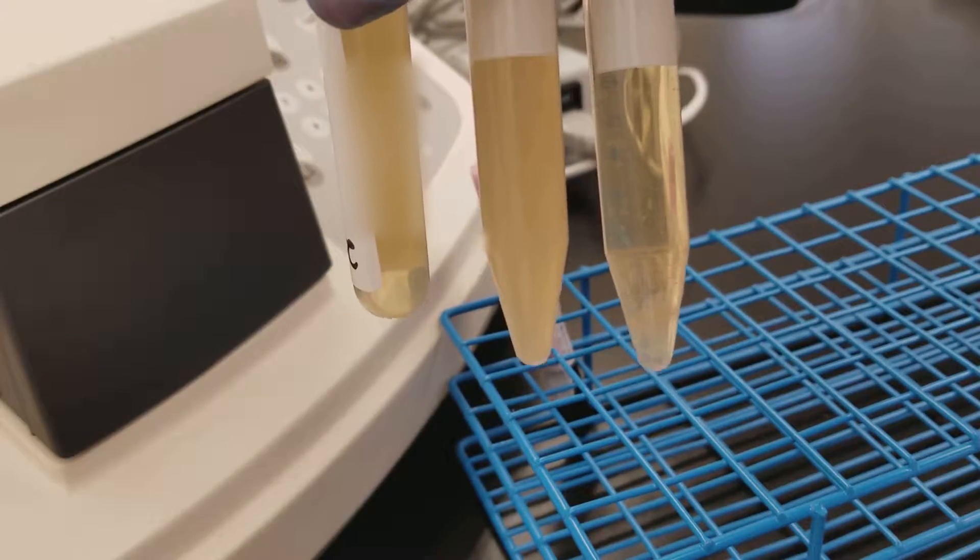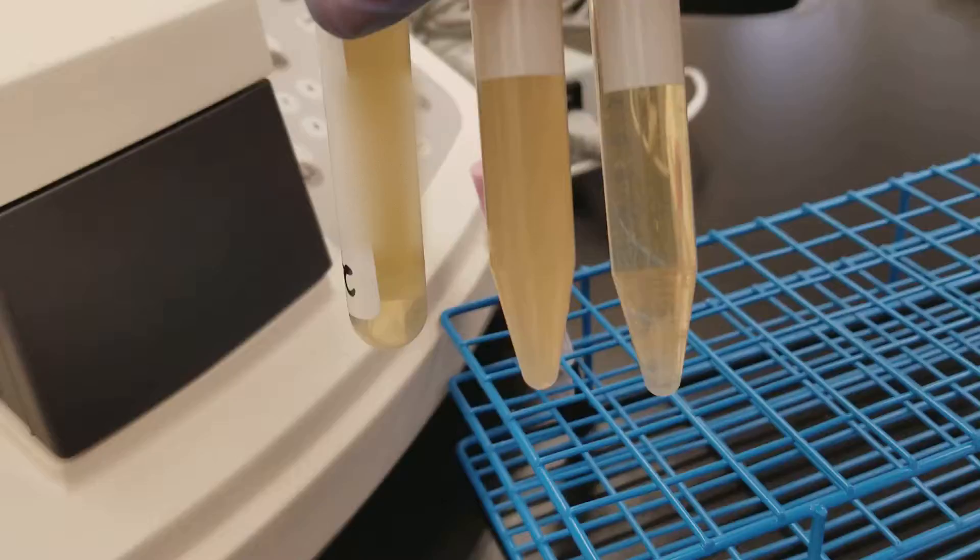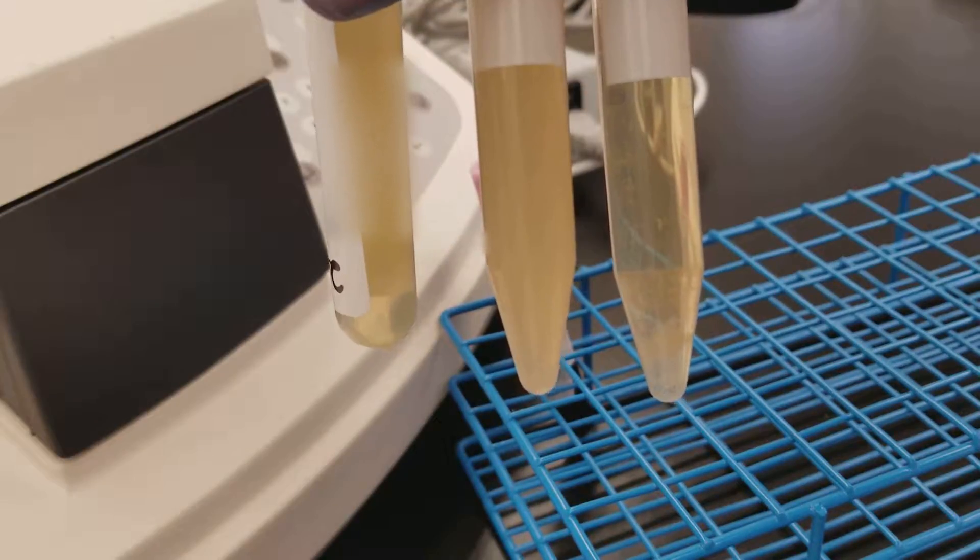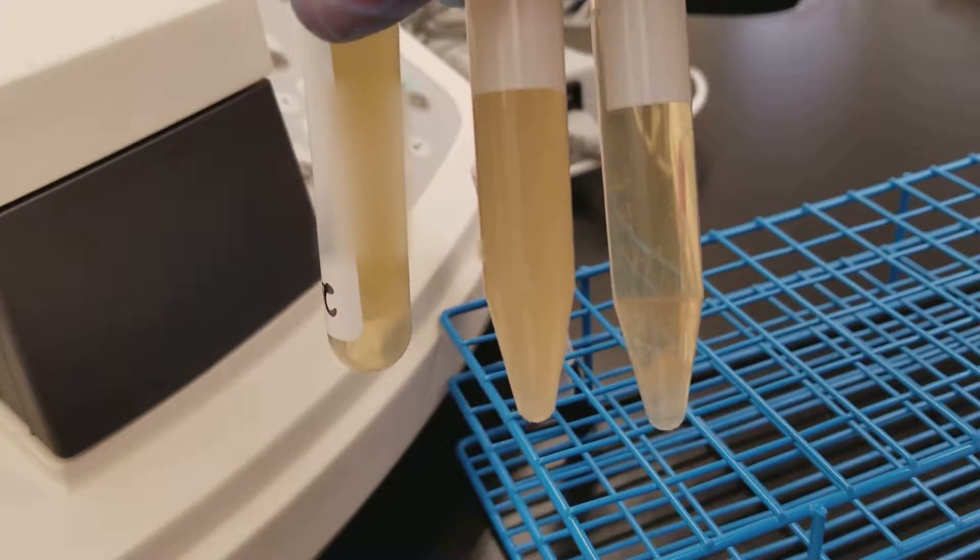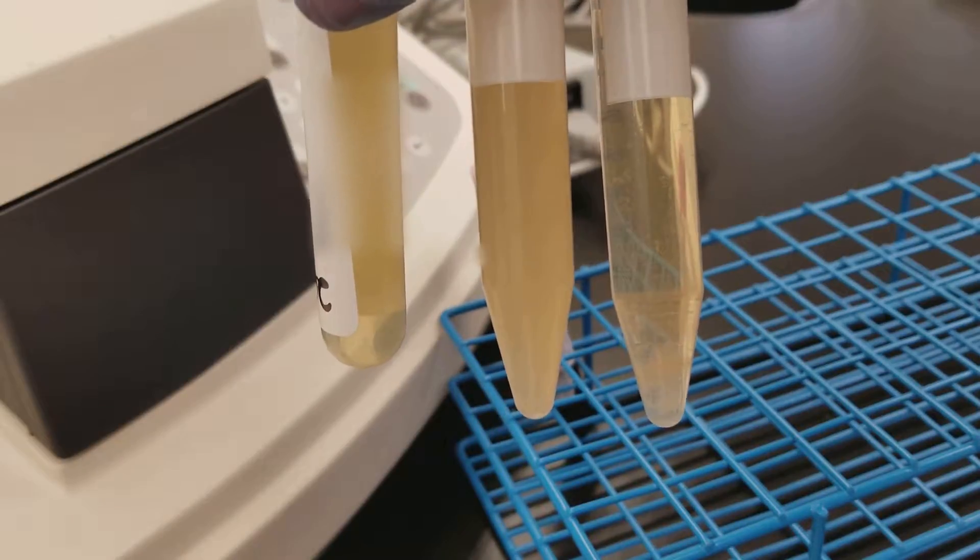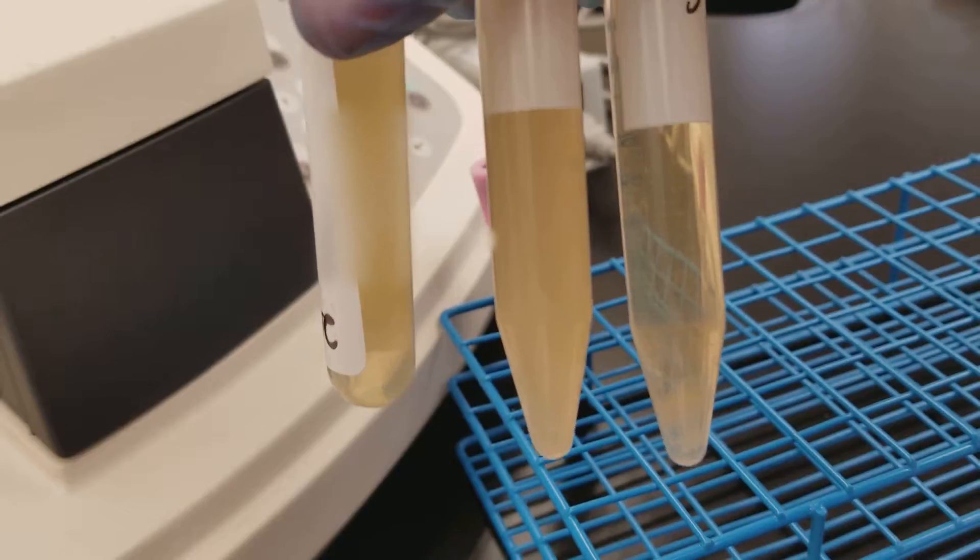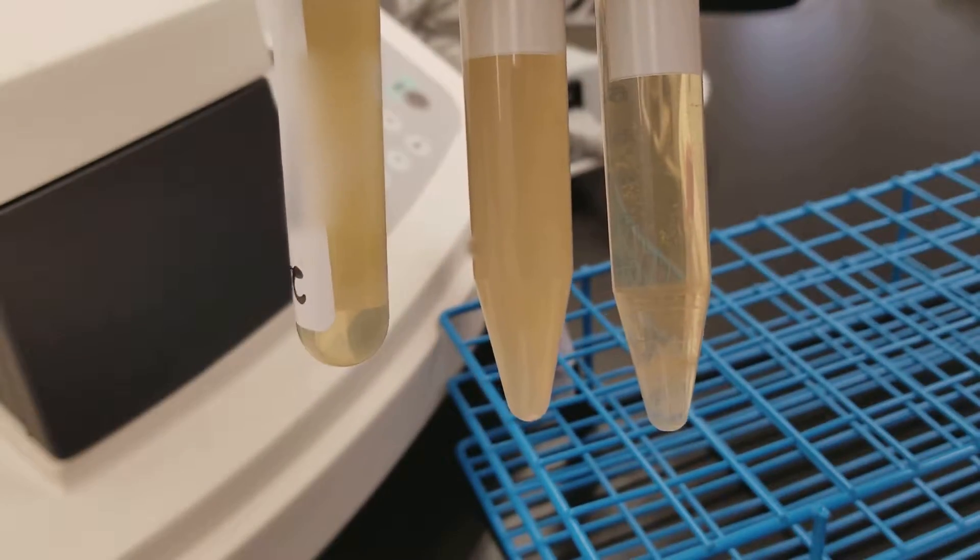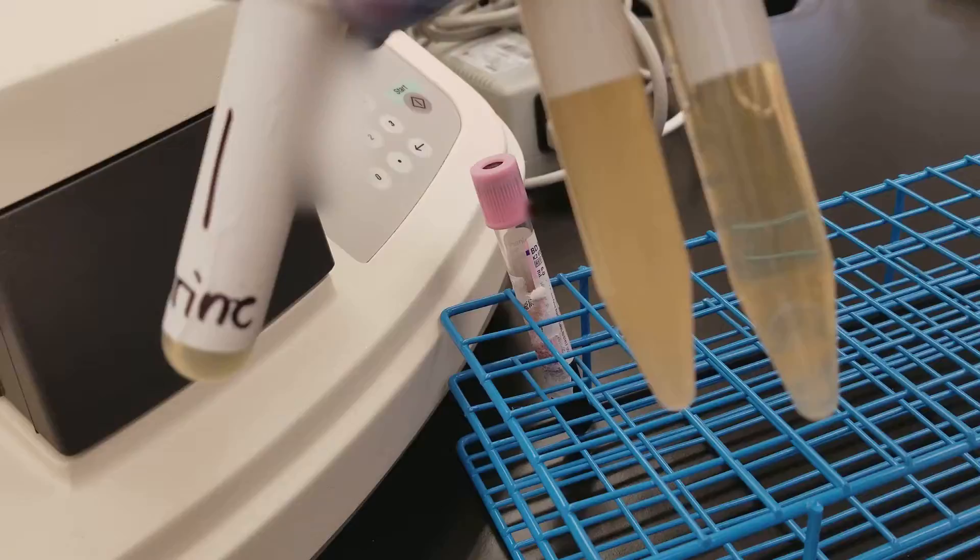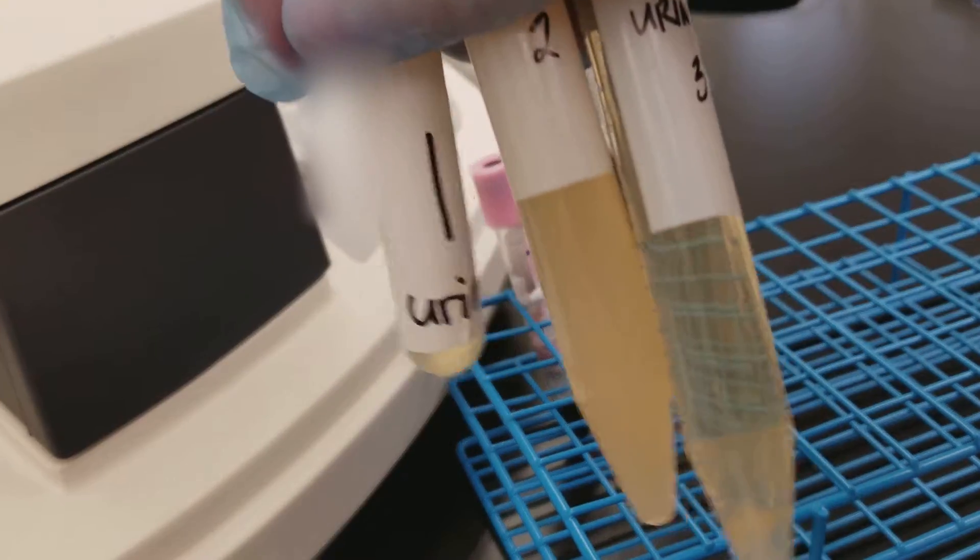And so when we think about color and clarity we're thinking about the color is going to indicate what kind of things might be in the urine chemically and you know the normal color is yellow but if it's a person who's maybe diabetic they might be urinating a lot.